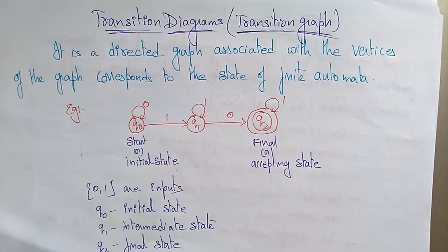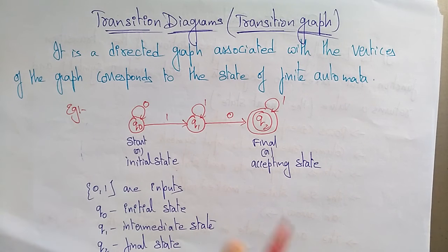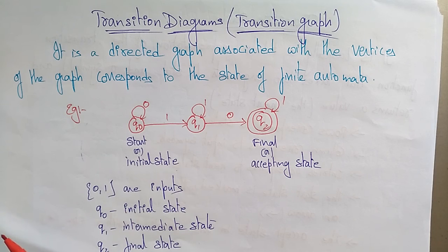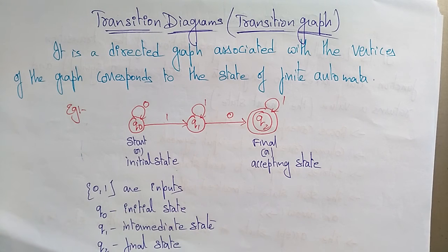Welcome back. Let's continue with finite automata. A finite automata can be represented in three ways: graphical, tabular, and mathematical. The graphical representation is the transition diagram, tabular is the transition table, and mathematical is the transition function.